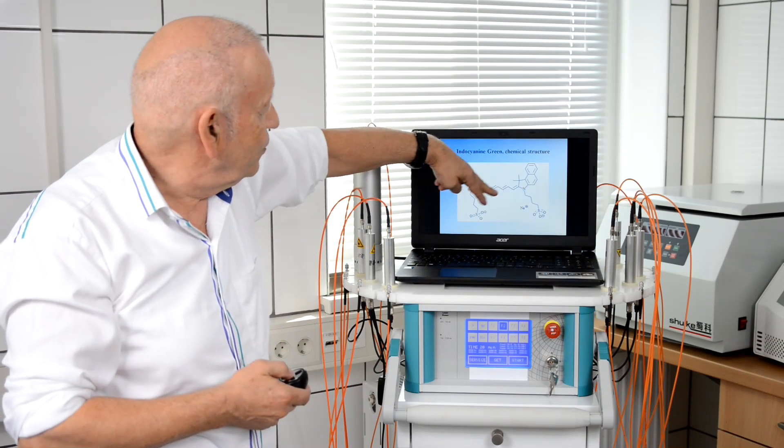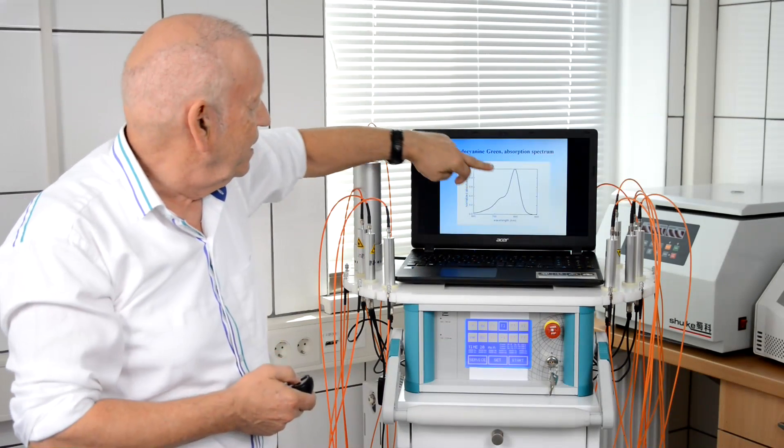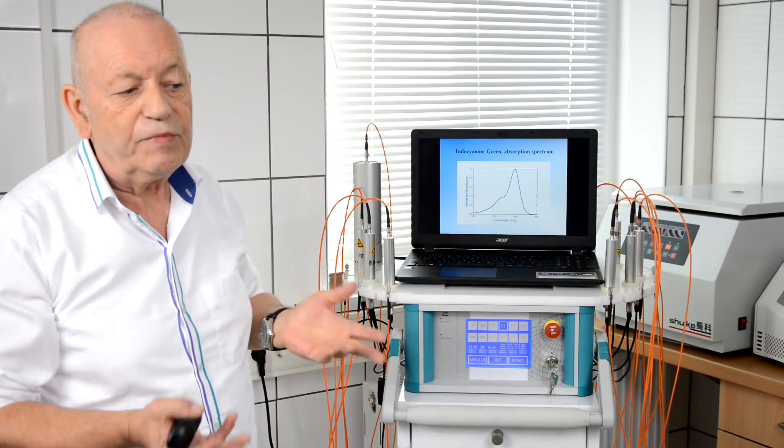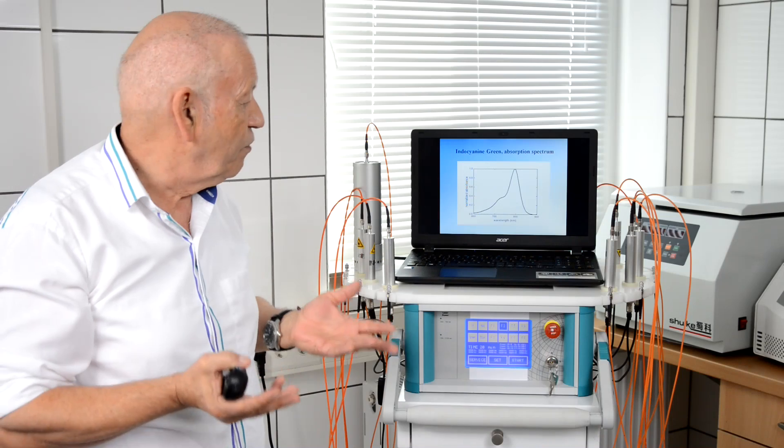Here you see in this picture the chemical structure of indocyanine green and the absorption maximum of 810 nanometers infrared light. So it is really the perfect photosensitizer.